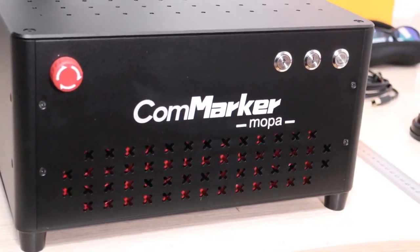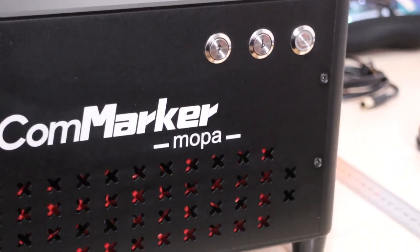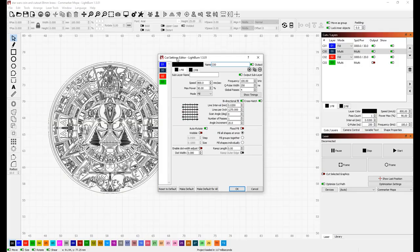This model is also a Mopa version, which stands for Master Oscillator Power Amplifier. Compared to a regular Q-switched fiber laser, it has a much higher frequency range and you can also control the pulse width parameter, which opens another dimension of usability as it enables you to have much better control over the energy of the individual laser pulses.